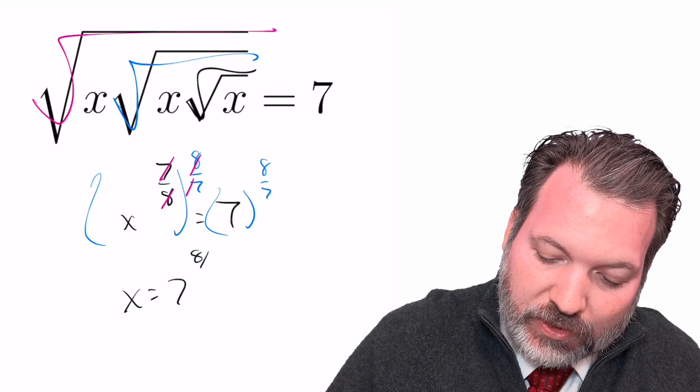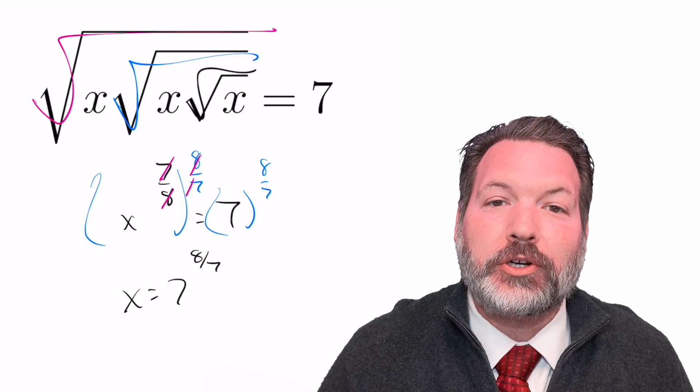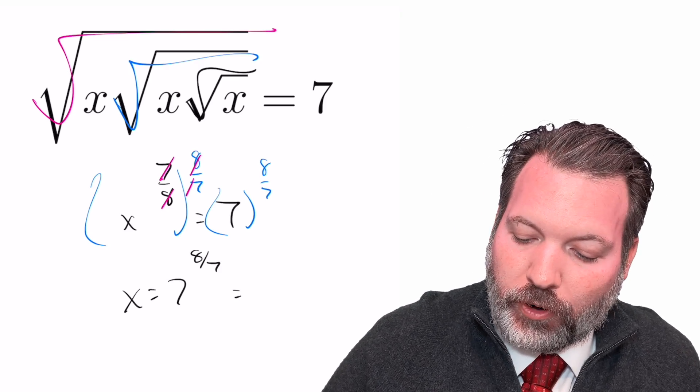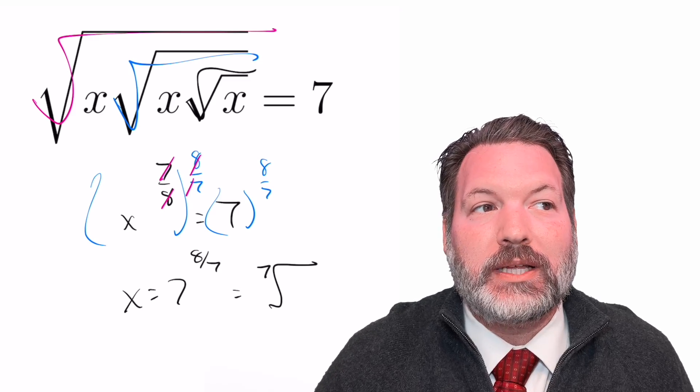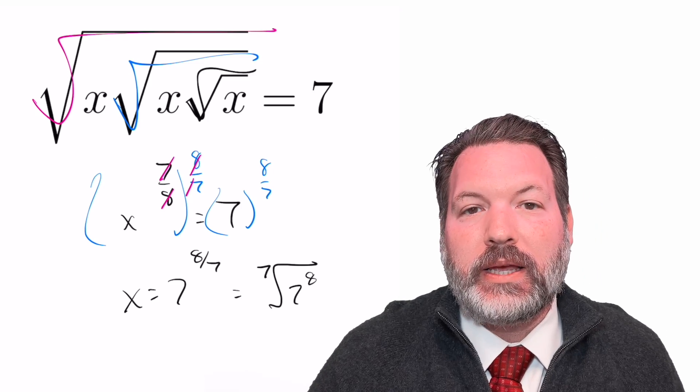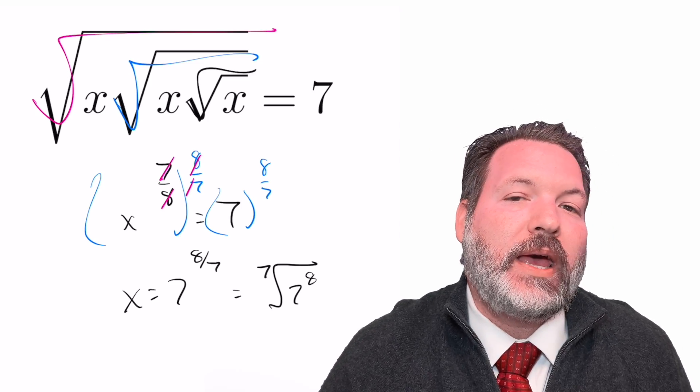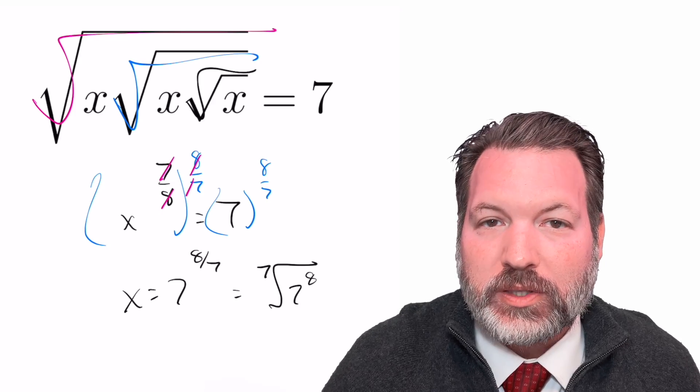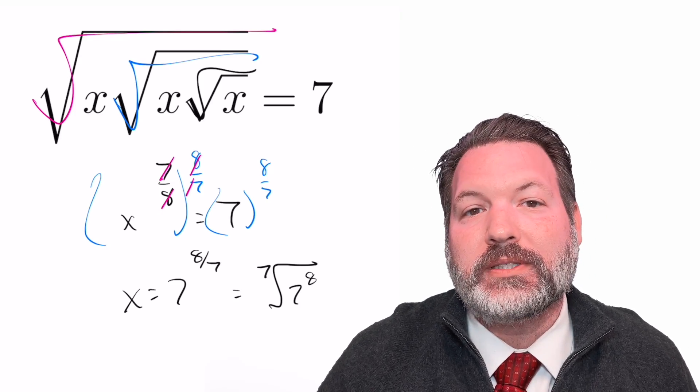On the other side, we just have seven to the eight sevenths power, which we could either leave in fractional exponent form or convert back into radical form. The denominator is the type of root we're taking, so this is a seventh root, and then inside that radical sign is the numerator part, seven to the eighth power. So x equals seven to the eight sevenths power, or alternatively, the seventh root of seven to the eighth power.